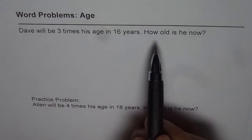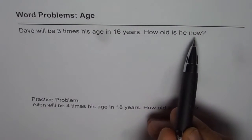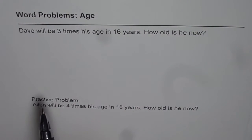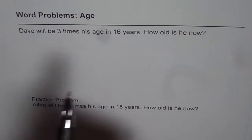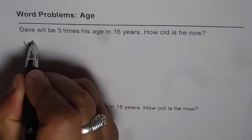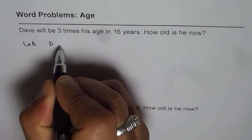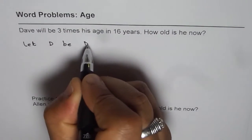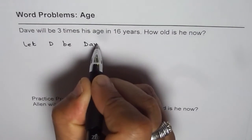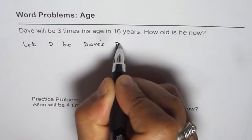So the question is asking for how old is Dave. Let's define a variable for that. Say, let D be Dave's present age.